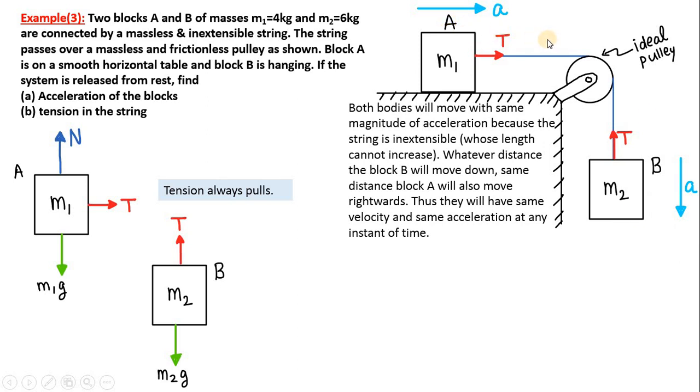Therefore at any instant of time they will have the same instantaneous velocity and thus the same instantaneous acceleration at any instant of time. Hence both bodies will be shown acceleration a and acceleration a.